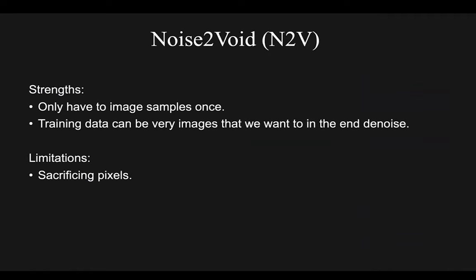Noise2Void is now very powerful because we only have to image samples once to train, we can image moving things, and we don't have to register images. The training data can be the images we'd like to have denoised. But some limitations remain. By removing pixels from the image, the network learns to ignore the value of a pixel when predicting its denoised output, sacrificing a lot of information. Another issue is that sometimes the assumption about pixel independence is incorrect — many scanning-based imaging modalities produce noise that is correlated from one pixel to the next.